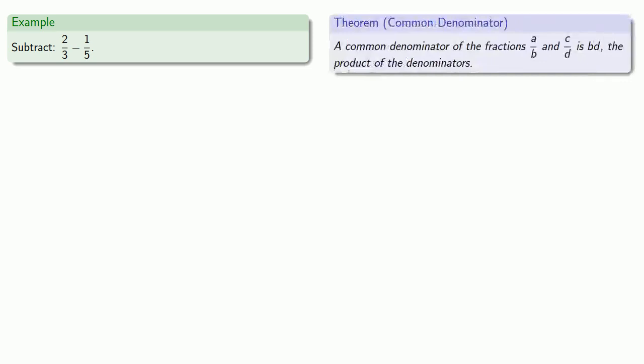So again we can find a common denominator by multiplying the denominators together. So a common denominator will be three times five, and so our fraction two-thirds, our denominator is missing the factor of five, so we'll put it in as long as we pay for it.